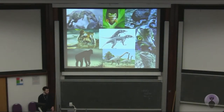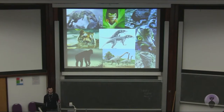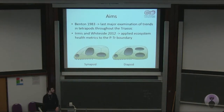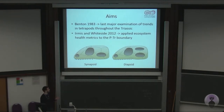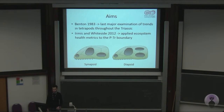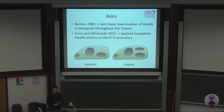For a period so important in tetrapod evolution — for both Mesozoic and modern ecosystems — we know relatively little about the actual ecological trends these groups are undergoing during the Triassic. This is something we aimed to rectify. The last major study looking at trends in these groups was Mike's paper in 1983, which looked at relative abundance of several groups. We wanted to apply updated metrics to a new dataset, using several metrics that Hermes and Whiteside applied across the PT boundary, extended to the wider Triassic.